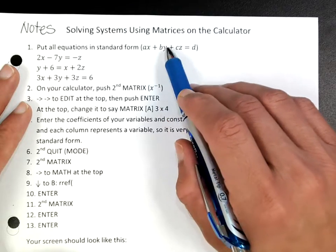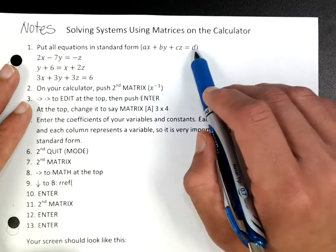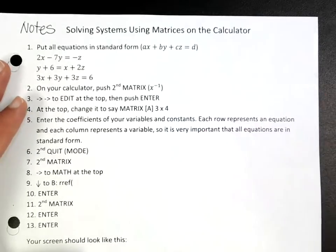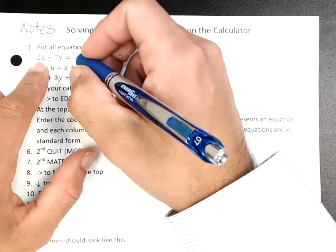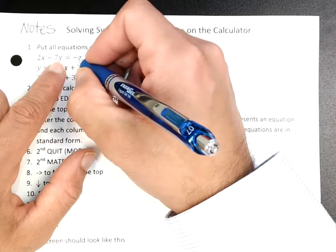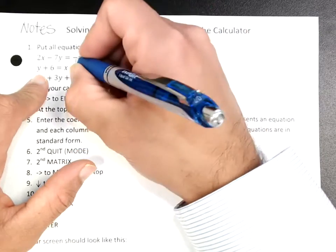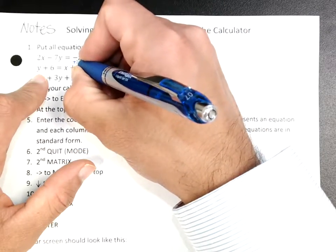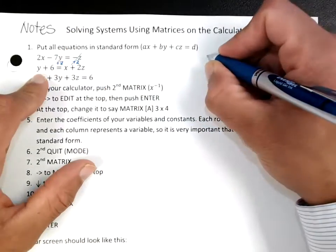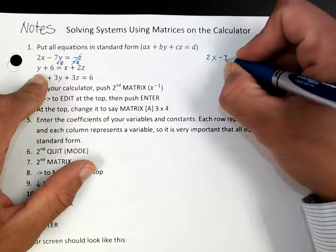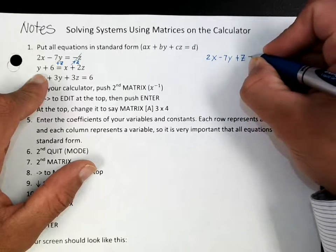You have to have the x first, the y second, the z term third, and then this d would be a constant. So for example, on this first one right here, notice you have the x and the y, but I also have to have the z on this side. So I'm going to add z to each side, and that would give me 2x minus 7y plus z is equal to 0.